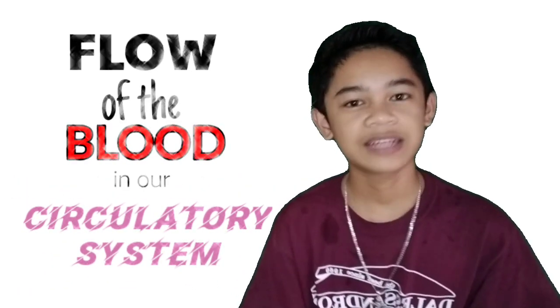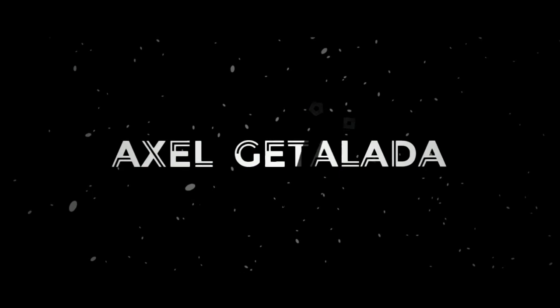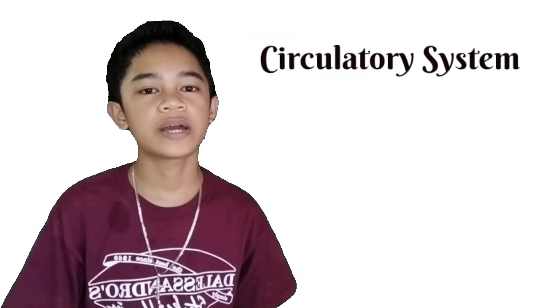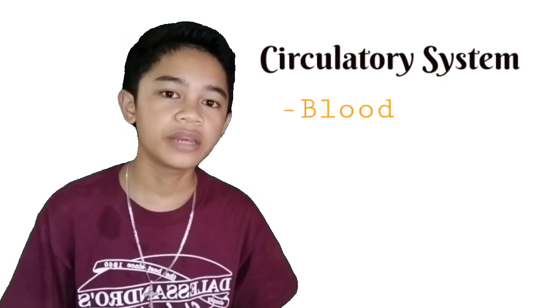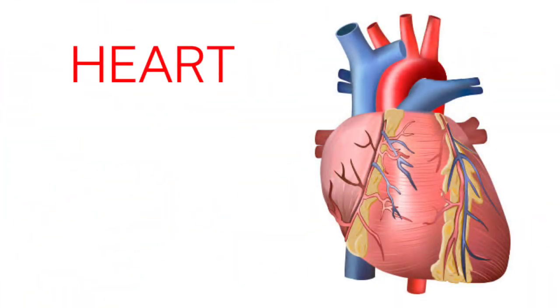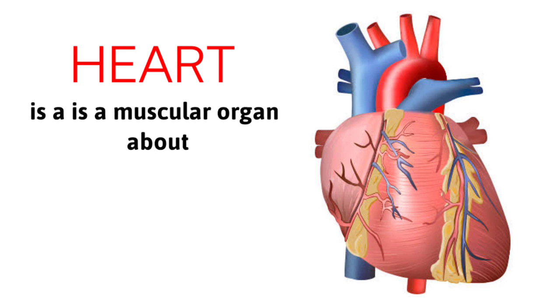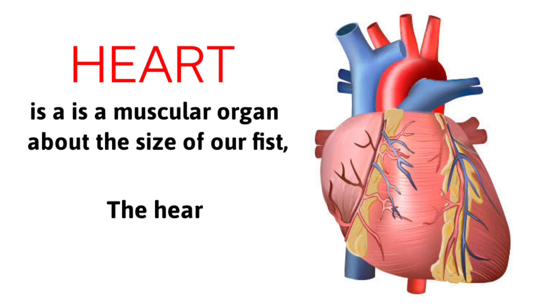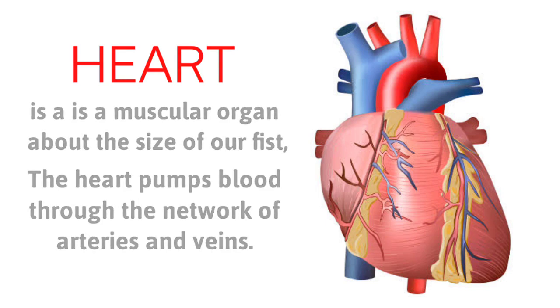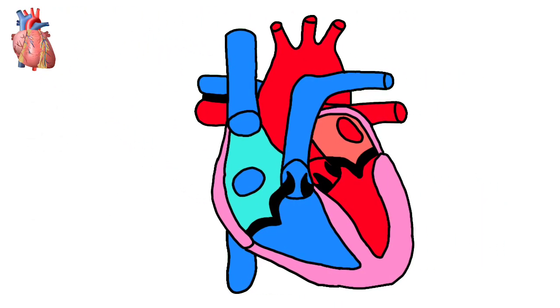For today's video we're going to learn about the flow of blood in our circulatory system. Our circulatory system is comprised of three parts: the blood, the blood vessels, and the heart. The heart is a muscular organ about the size of our fist, and it pumps blood through the network of arteries and veins. Without the heart, we can't live.